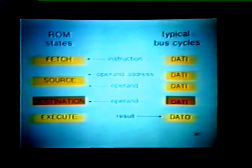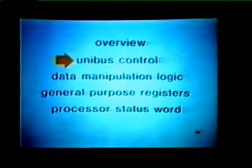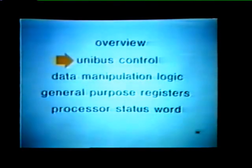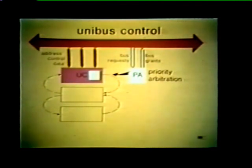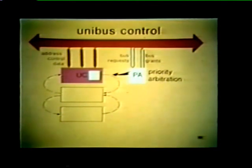That completes our overview of the PDP-11 processor. Now let's take a closer look at the major elements, beginning with the unibus control. The unibus control, or UC, handles all address, control, and data flow between the processor and devices connected to the unibus. The priority arbitration logic is also located in the unibus control and handles all bus requests and corresponding bus grants.